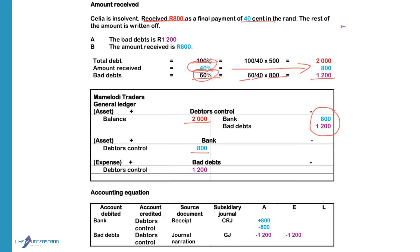The bank account is debited to increase the asset and bad debts is debited to increase the expense. Debtors control is credited to decrease the assets. We issue a receipt as proof of payment and we record this in the cash receipts journal. The bad debts account is debited to increase expenses that will reduce profits so equity will decrease with 1,200. Debtors control is credited to decrease the asset. We will record this in the general journal and we will use a journal narration as a source document.